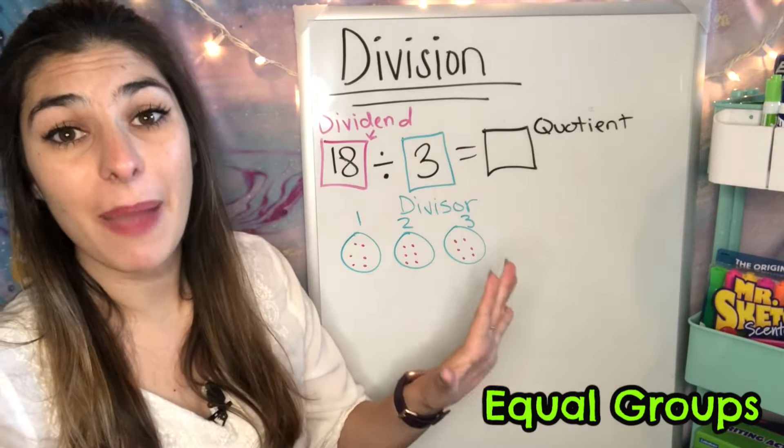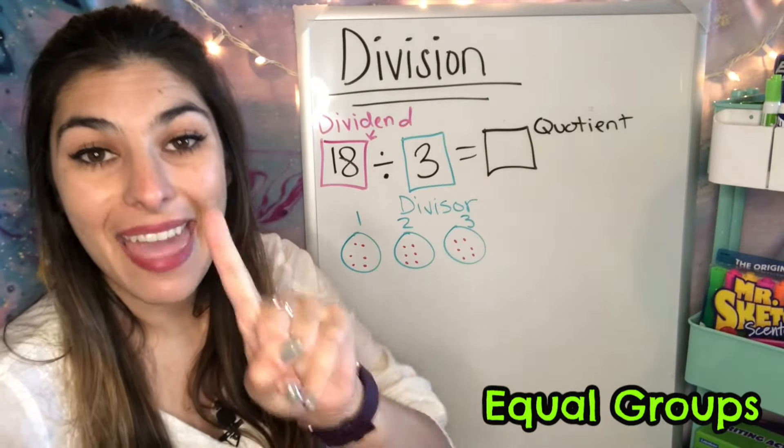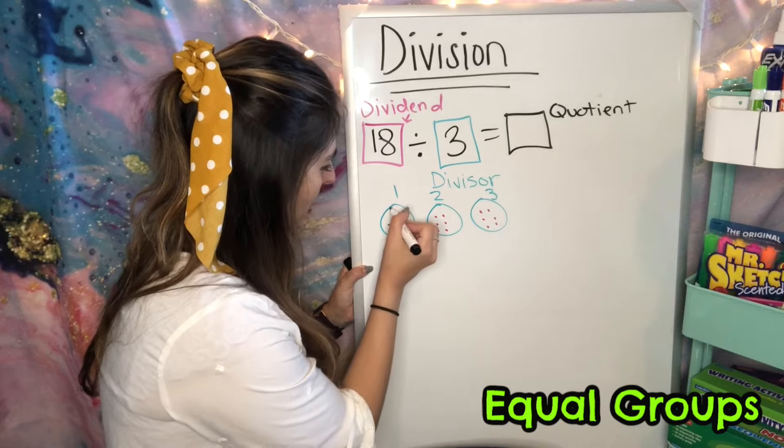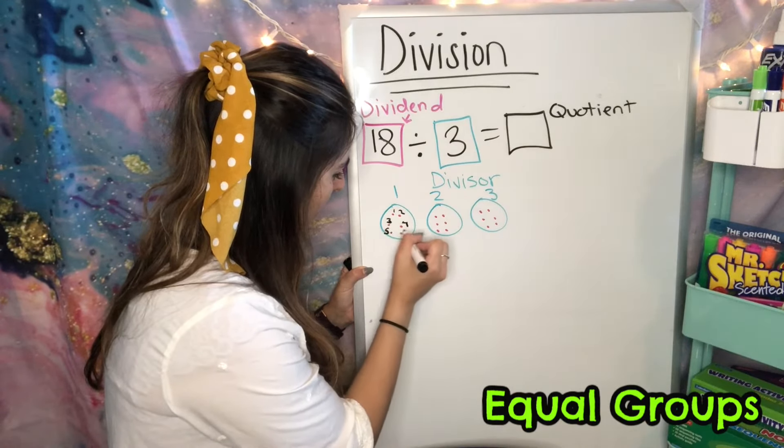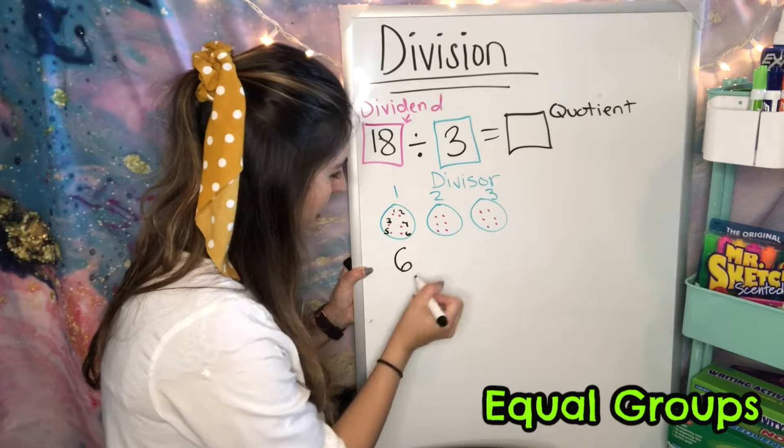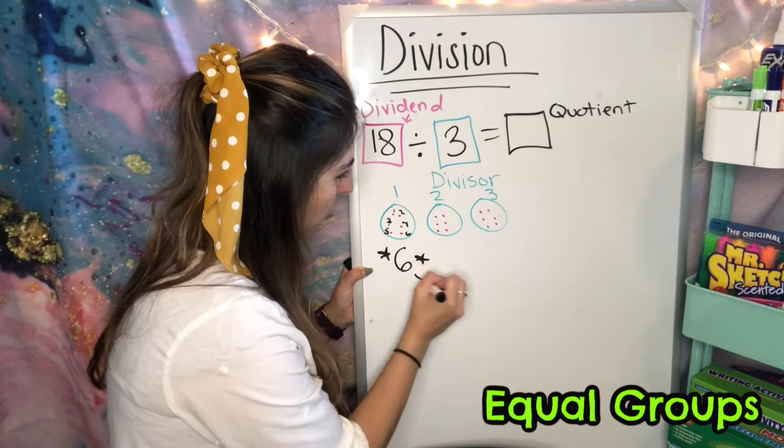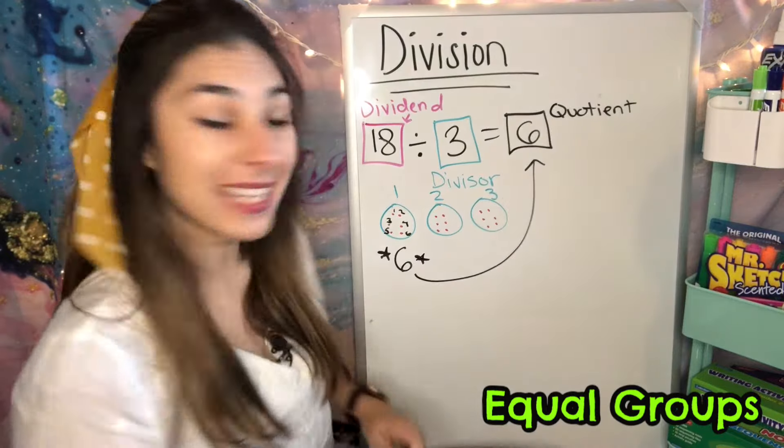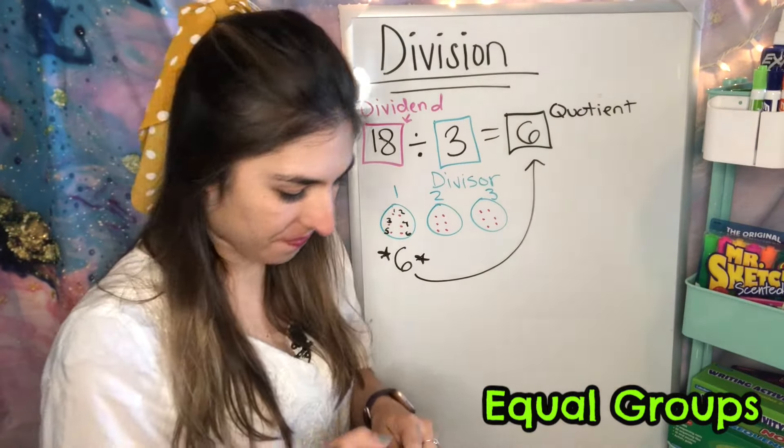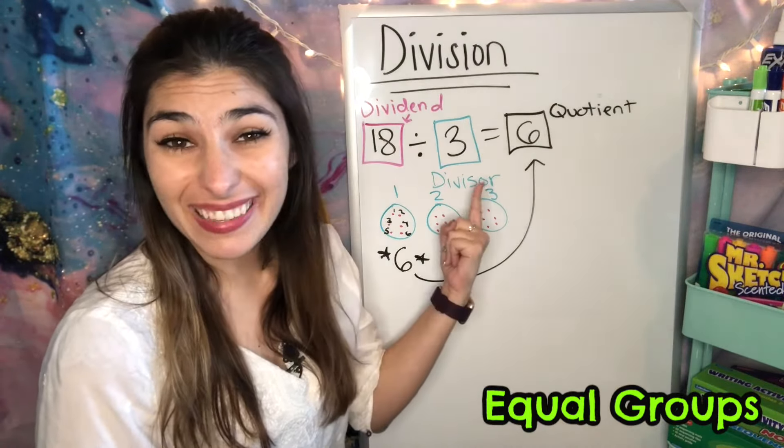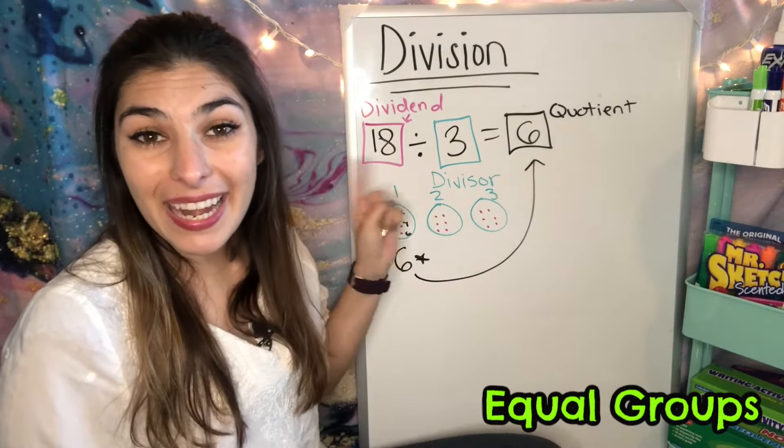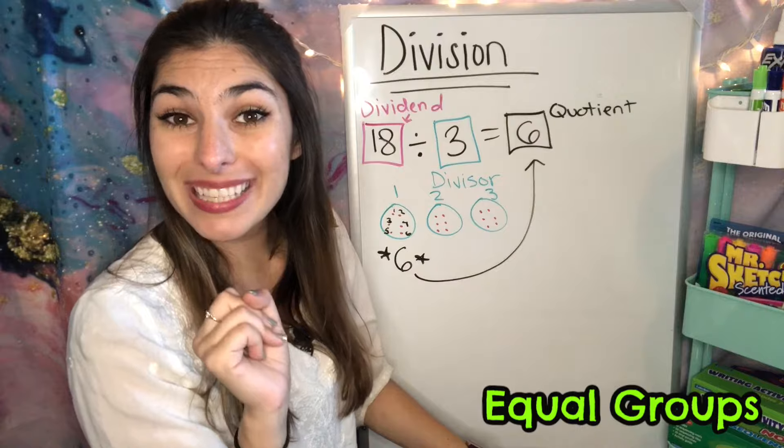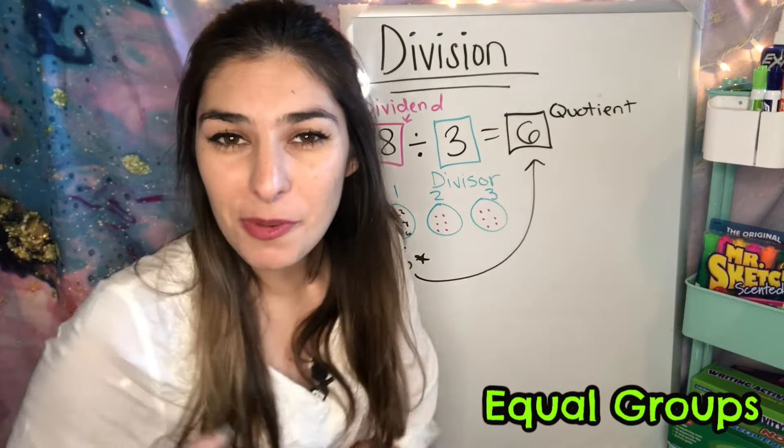Now that I've gone to 18, I'm going to count up how many is in one circle, and that's going to be my answer. So I see 1, 2, 3, 4, 5, 6. So my answer, 6. 6 is my quotient. So this is equal groups. You're taking that small number and drawing that amount of circles, and you're going to distribute that 18, one in each circle until you get to 18.